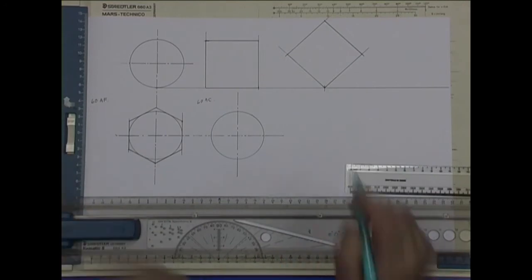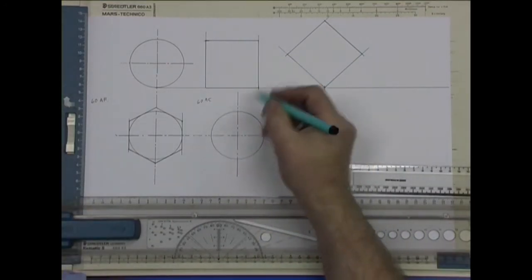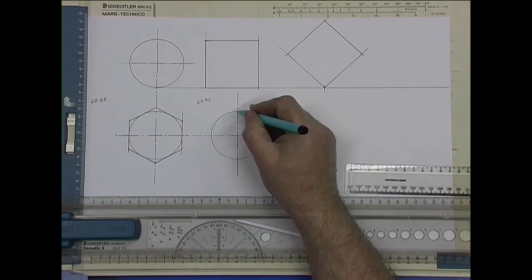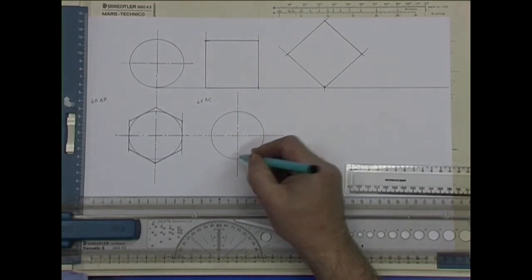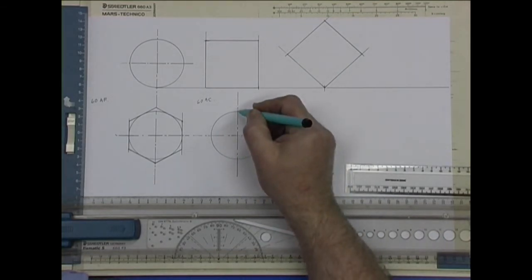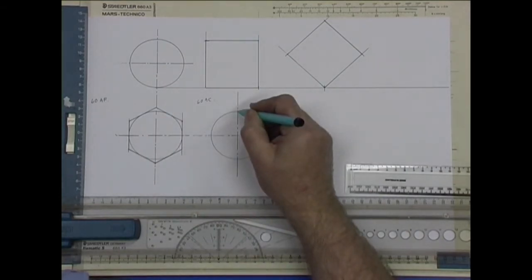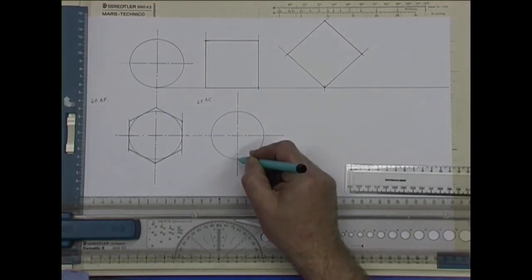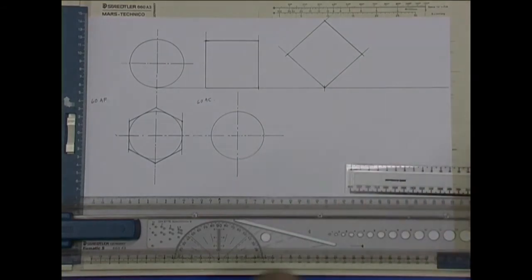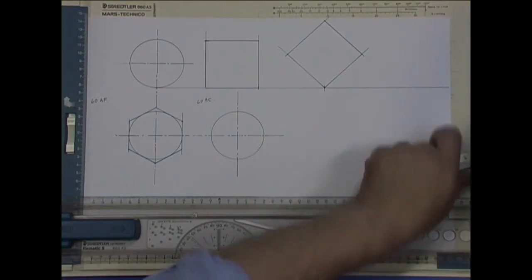Now across the corner, that circle is 60 millimeters. So if I'm going on a vertical hexagon like this one, the distance between that point and that point is 60. So the hexagon gets drawn inside the circle.